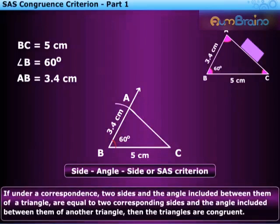It can also be stated as: if under a correspondence, two sides and the angle included between them of a triangle are equal to two corresponding sides and the angle included between them of another triangle, then the triangles are congruent.